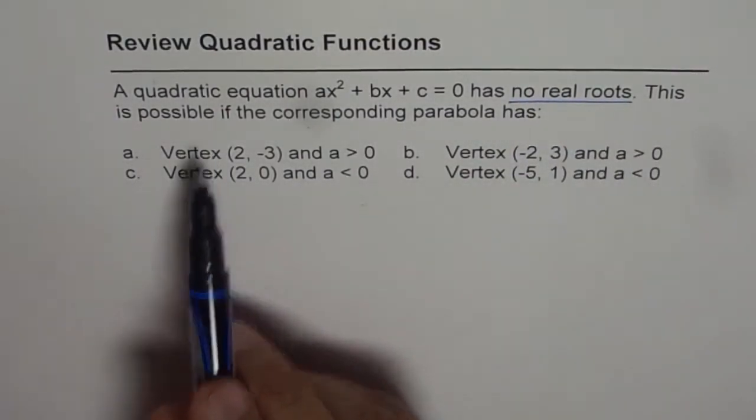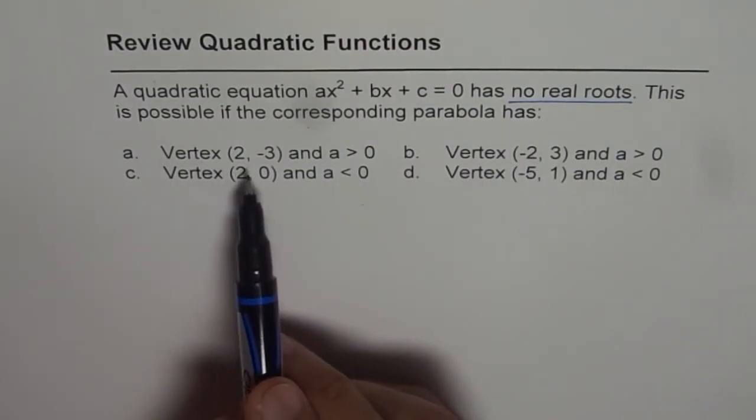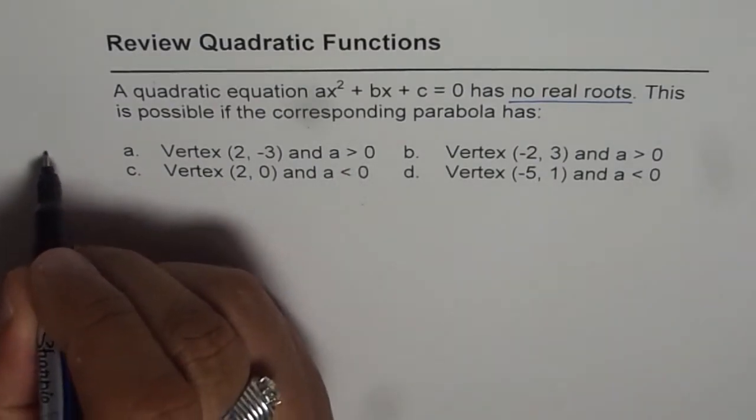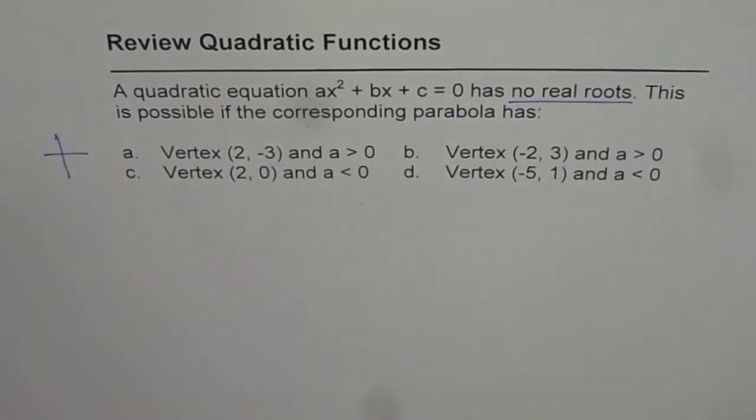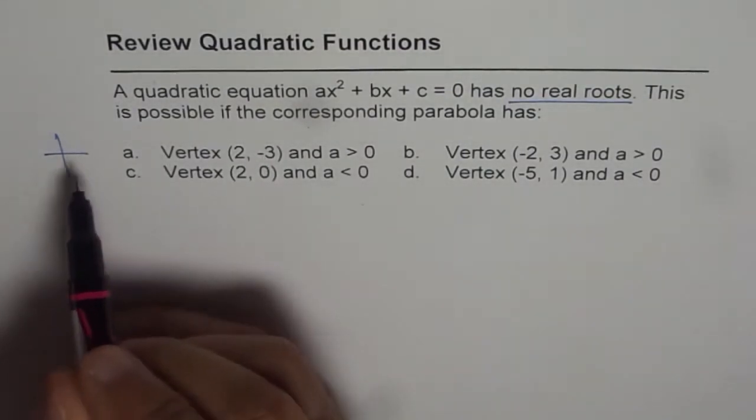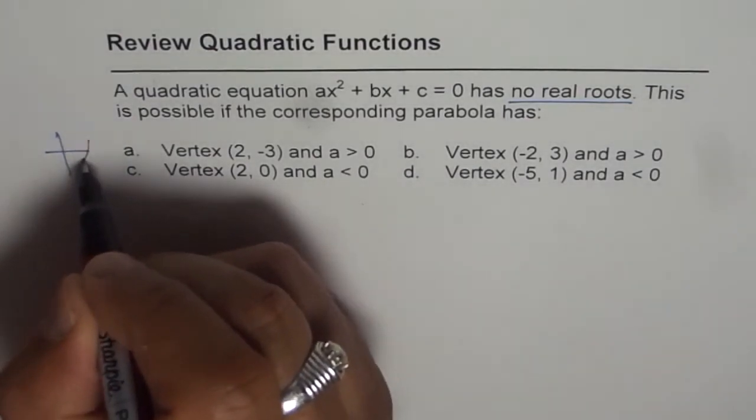This is possible if the corresponding parabola has vertex (2, -3) and a > 0. So let's say we are in this quadrant. So (2, -3) will mean somewhere here. a > 0 means the parabola opens upwards, so it will have two solutions. So that's not it.